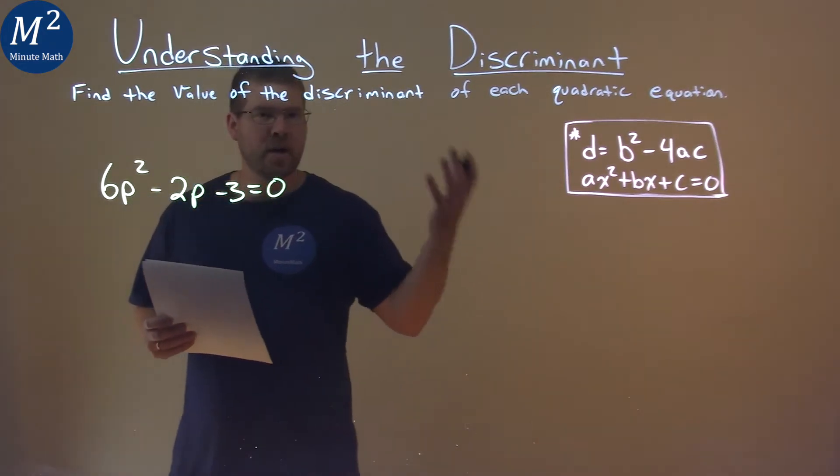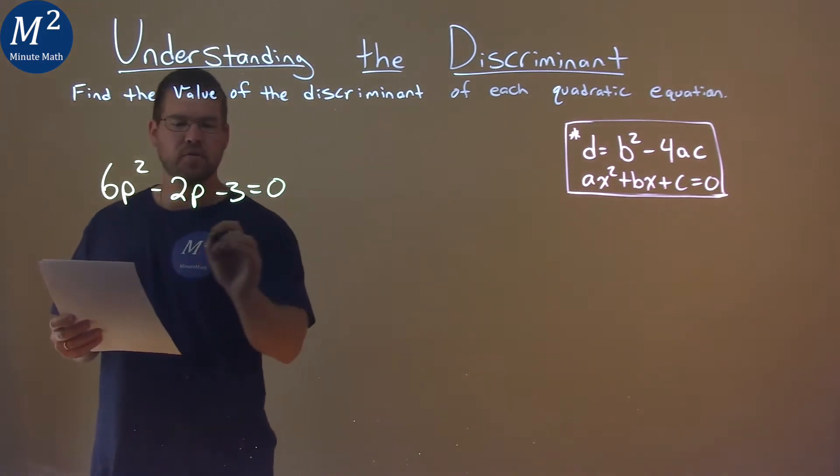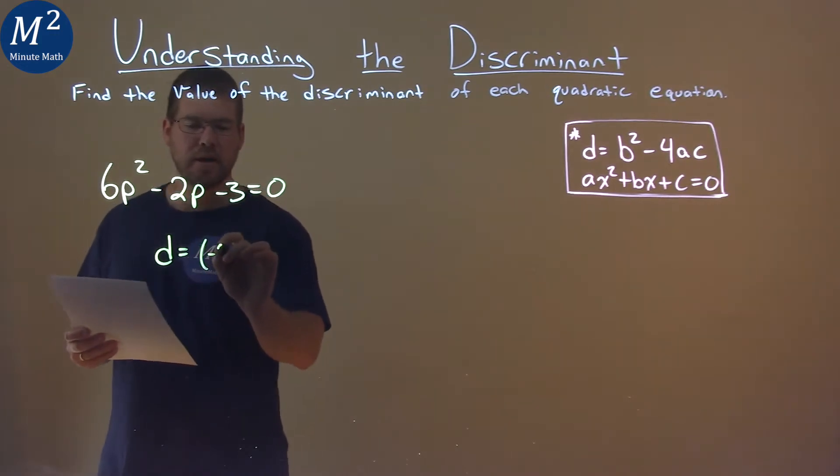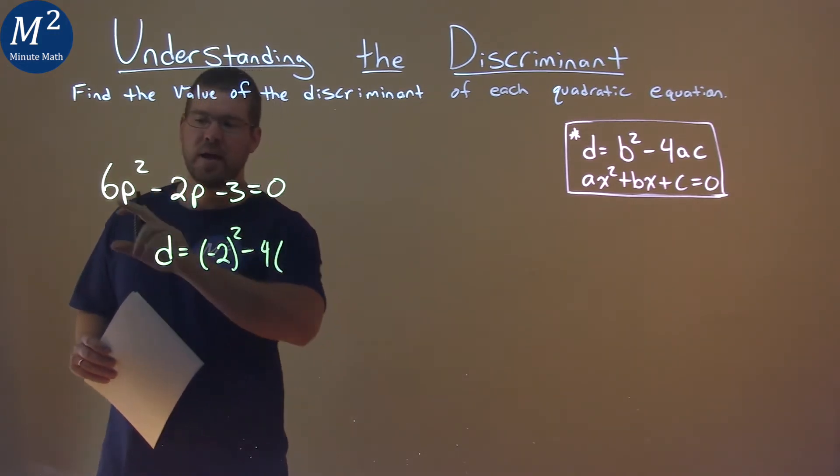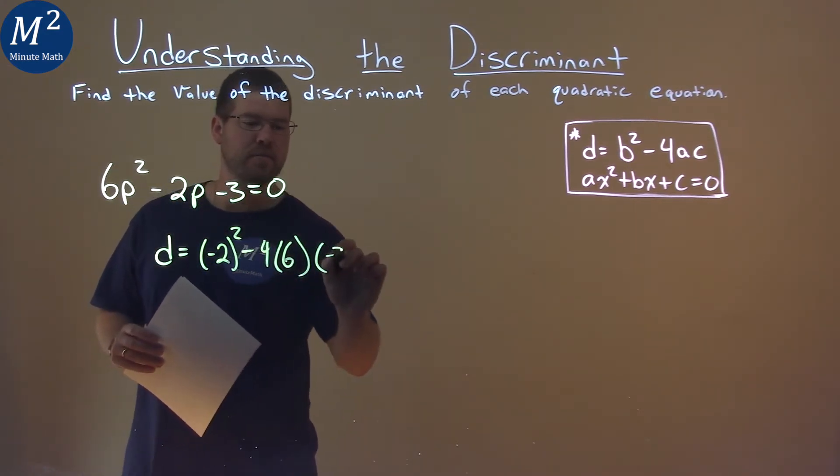So we need to plug in our B, A, and C values. We use the formula. Our discriminant is equal to B squared, so negative 2 squared, minus 4 times the A value, which is 6, and our C value, which is negative 3.